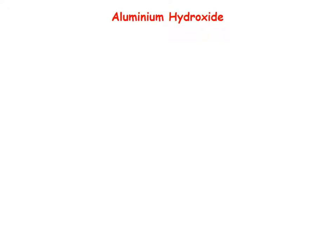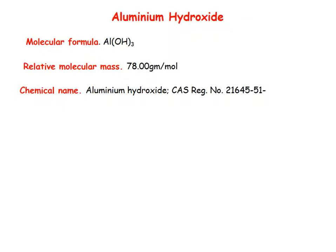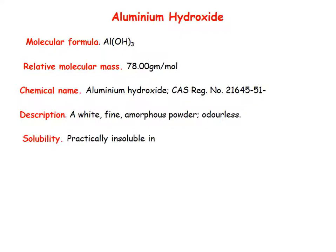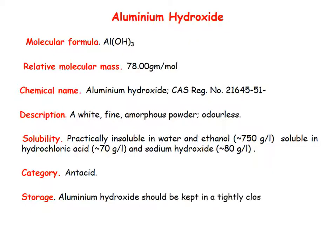Now we will see what aluminium hydroxide is and how it is used as an antacid. Molecular formula: Al(OH)₃. Relative molecular mass: 78 g/mol. Chemical name: aluminium hydroxide. CAS number: 21645-51-2. It is a white, fine, amorphous, odourless powder, practically insoluble in water and ethanol, but soluble in hydrochloric acid and sodium hydroxide. Category: antacid. Storage: keep in a tightly closed container.